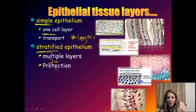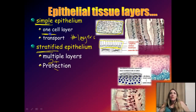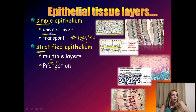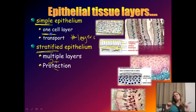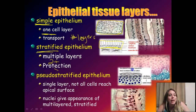Simple epithelium tends to be found in areas where transport is necessary, such as the lining of blood vessels or areas with saliva. Stratified epithelium is found in areas where protection is the major concern — for example, your palms and the soles of your feet, where you want thick epithelial tissue because of stress from the environment. So simple versus stratified depends on the need for transport versus protection.